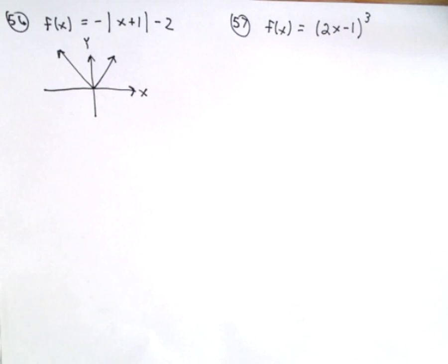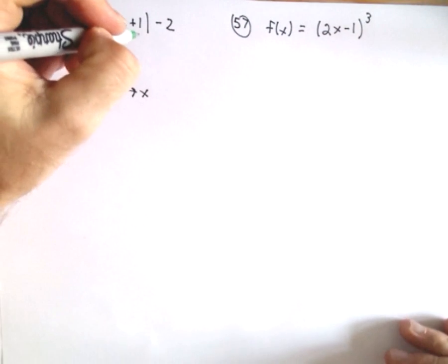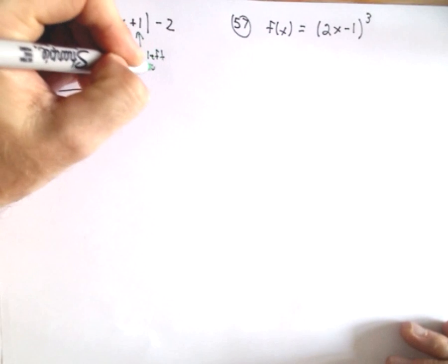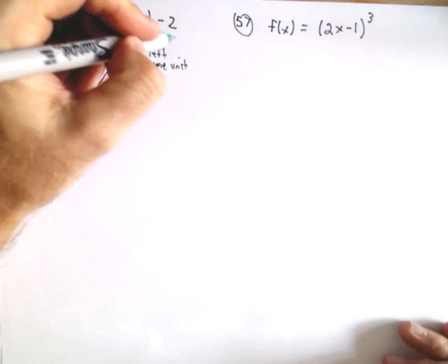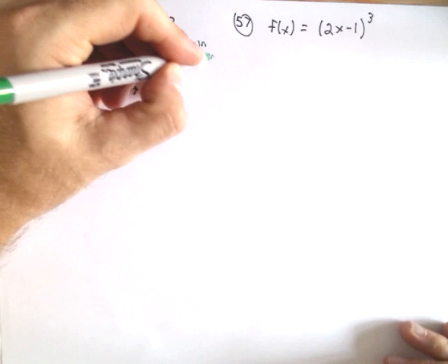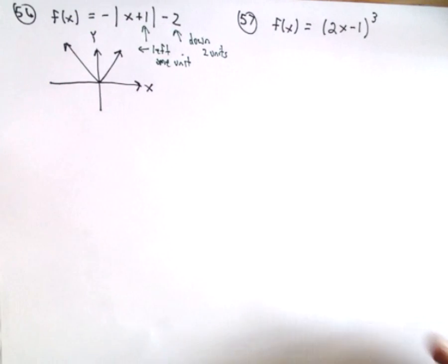So the +1, just like before, that's going to shift the graph. Since it's on the inside, that's going to shift the graph to the left one unit. The -2 is going to shift it down two units, and the negative is going to reflect it.